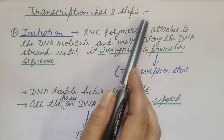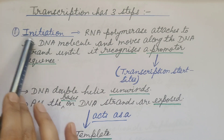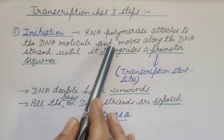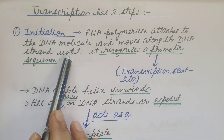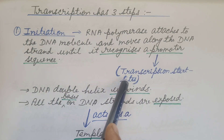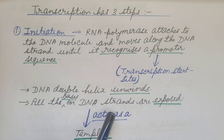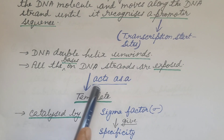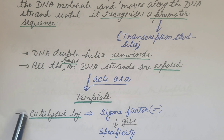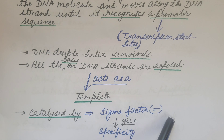In prokaryotes, transcription has three steps: initiation, elongation, and termination. In initiation, RNA polymerase attaches to the DNA molecule and moves along the DNA strand until it recognizes a promoter sequence — that is, the transcription start site. The DNA double helix unwinds, all the bases on the DNA strands are exposed, and the strand with 3' to 5' polarity acts as the template. This initiation step is catalyzed by the sigma factor, which is known as the initiation factor.